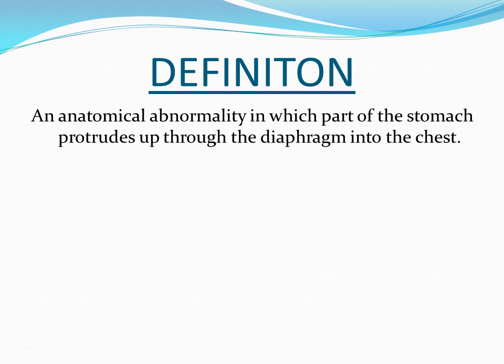The definition of hiatus hernia: it is an anatomical abnormality in which part of the stomach protrudes up through the diaphragm into the chest.